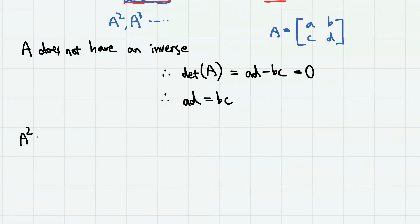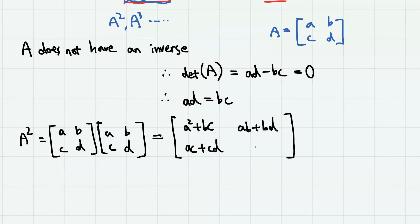The next thing you can do is to try to calculate A squared, which is this. And if we carry out the multiplication, we have A squared plus BC here, AB plus BD here, AC plus CD here, and finally BC plus D squared here.